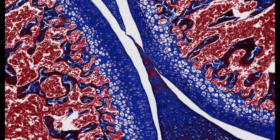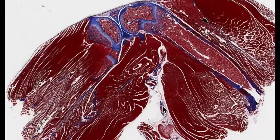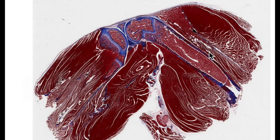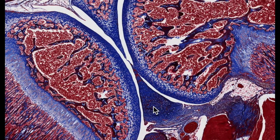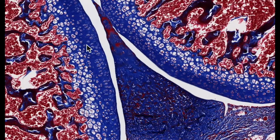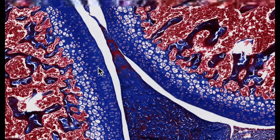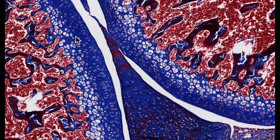So here, for example, we're looking at a trichrome stain section of the knee joint. Here's the femur, here's the tibia, and you can see the fibula here. We've got some menisci here — so this is fibrocartilage. We've got articular cartilage here, and all of this lovely blue is collagen of the matrix of the cartilage — hyaline cartilage. We've got our chondrocytes within the lacunae and so on.